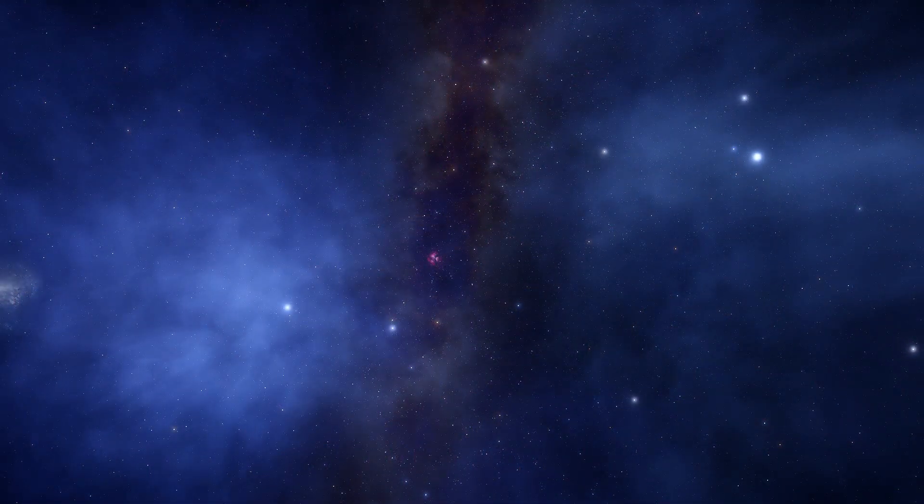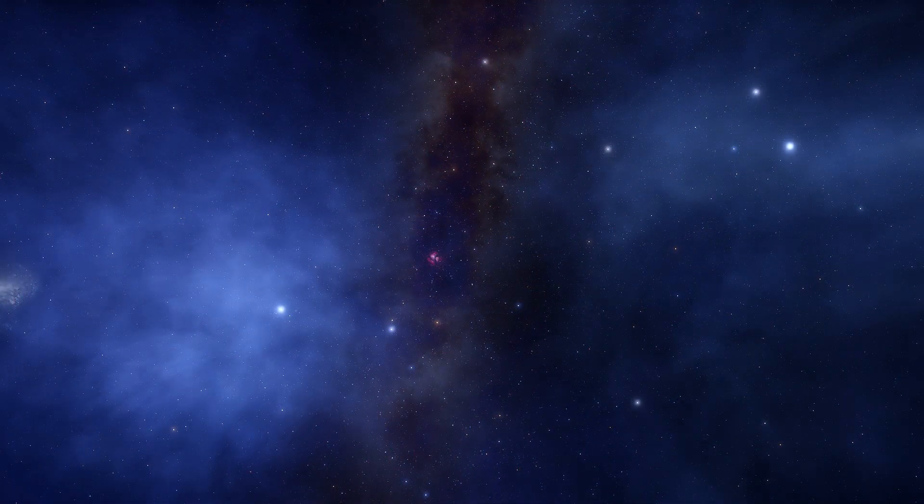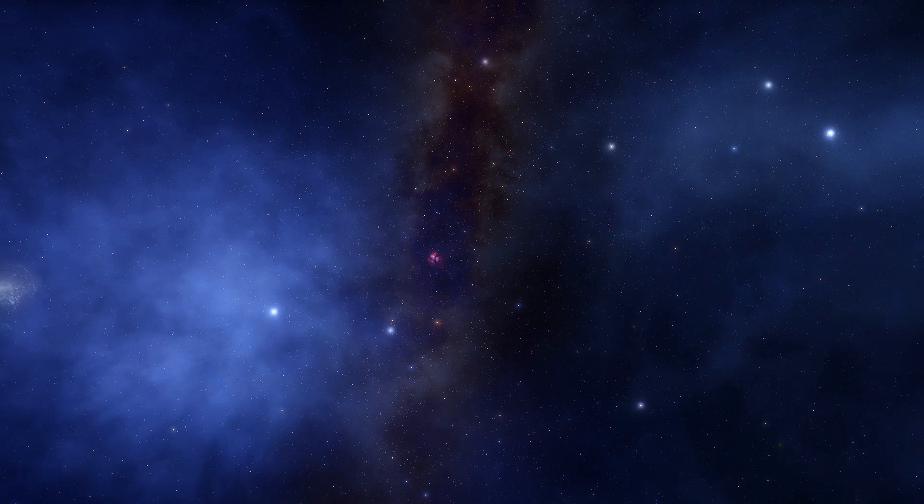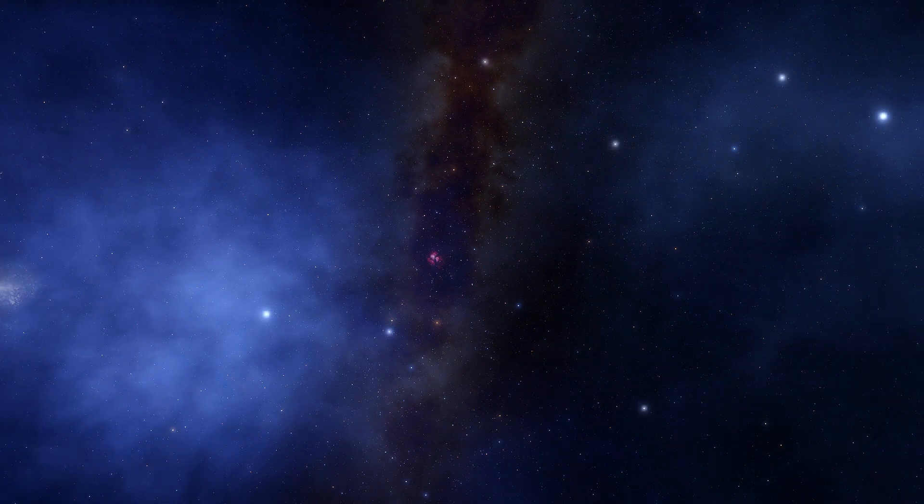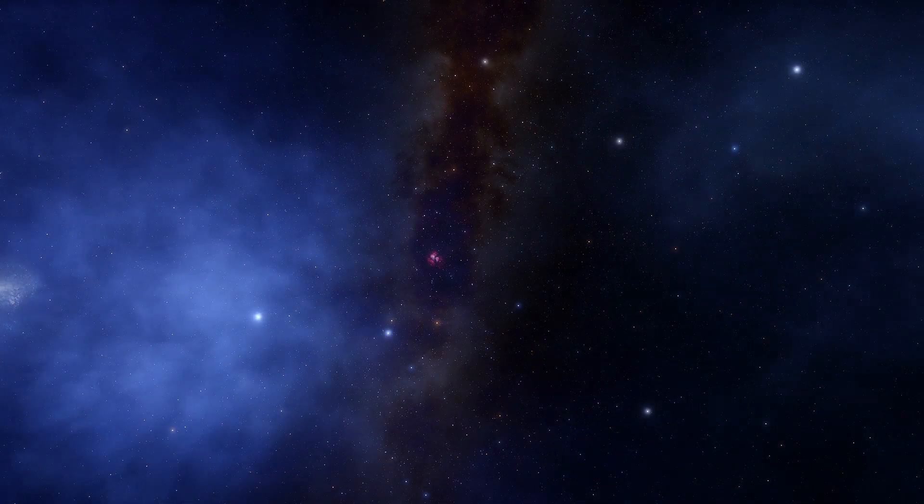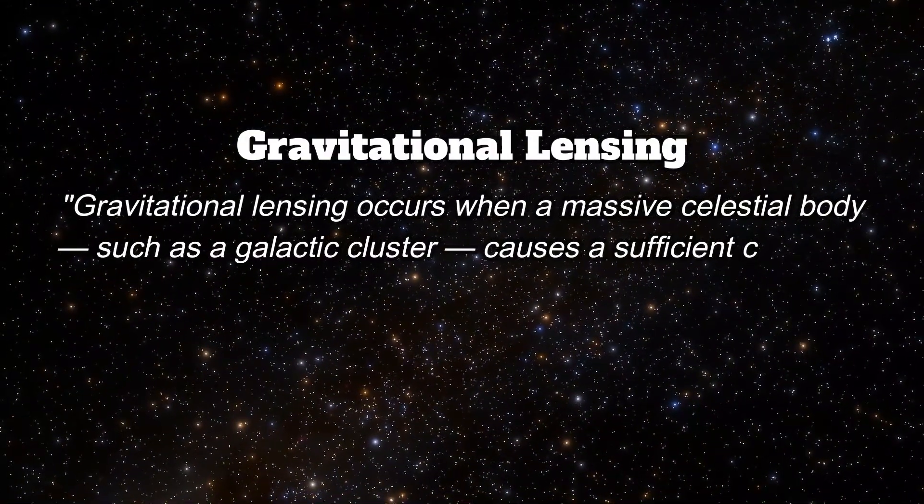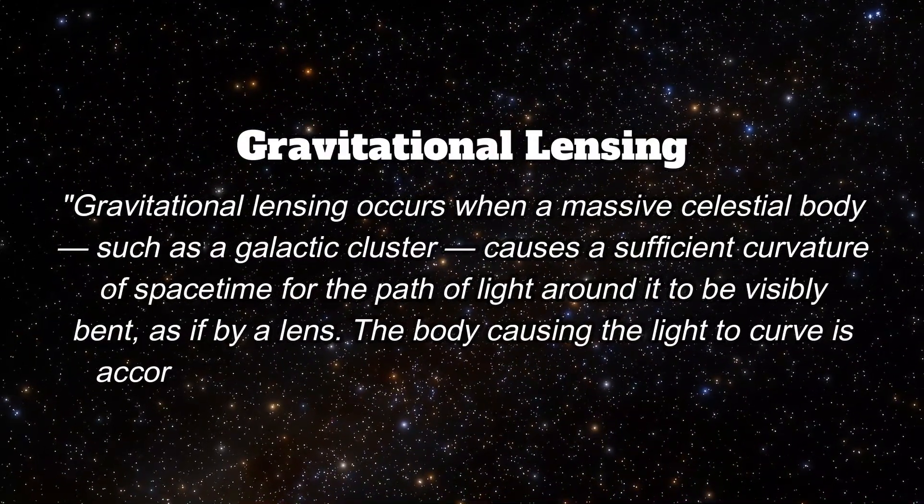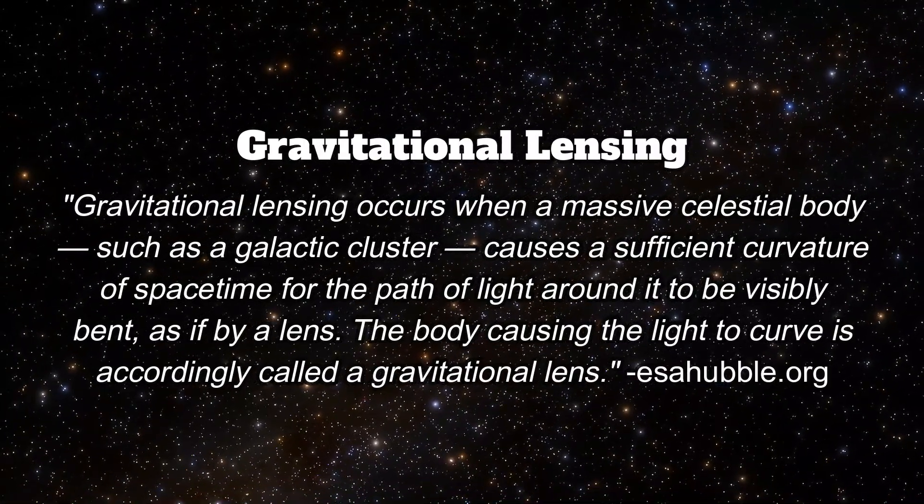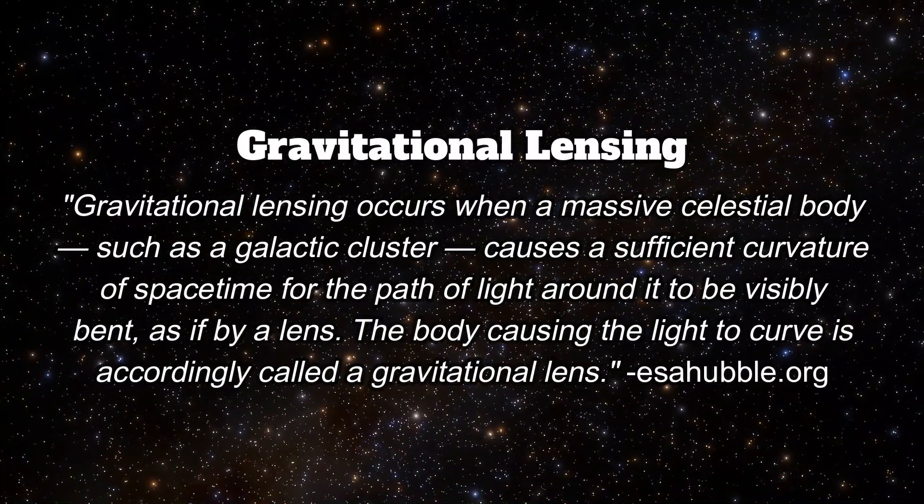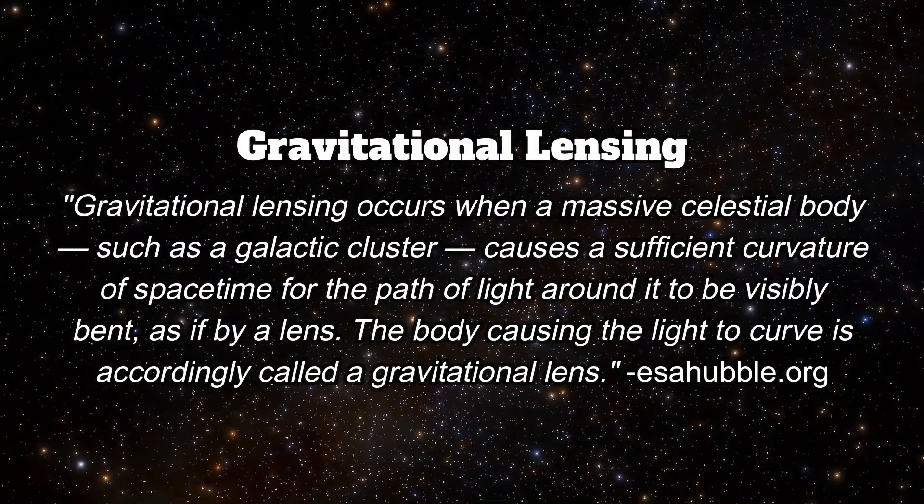Another point to note about dark matter is that not only does it influence the trajectories of very large objects, but also that of some of the smallest things in the universe. Through a phenomenon called gravitational lensing, it can be observed that massive objects in the universe bend and distort the path of light due to the force of gravity that these objects exert.